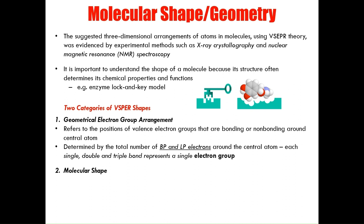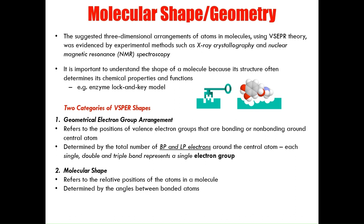This brings us to our second category of VSEPR: molecular shape. This category refers to the relative position of atoms in the molecule rather than the electron groups, and is determined by the angles between the bonded atoms. What sets this category apart is that lone pairs are not considered when describing the shape of a molecule.